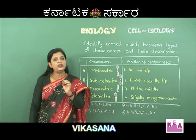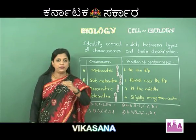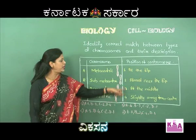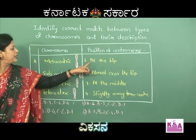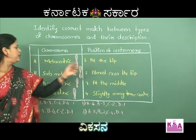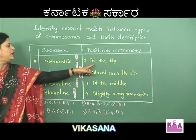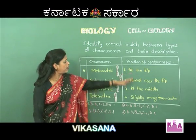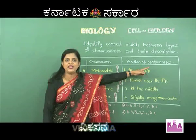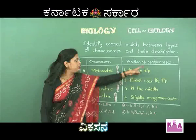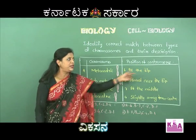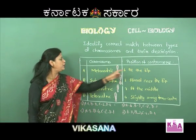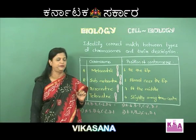You would have already learned these. The descriptions given - just go through them once. The first option says metacentric chromosome has the centromere at the tip. But metacentric chromosome does not have the centromere at the tip. The second column gives the position of the centromere. At the tip - that is not metacentric. Therefore option A2 is a wrong option.